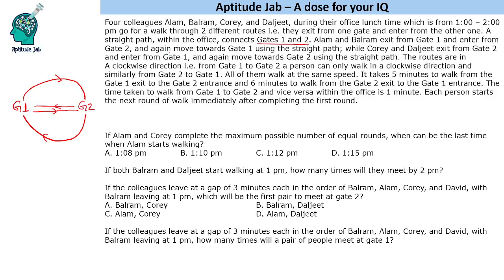A and B exit from gate 1, so this is the route for A and B, and this is the route for C and D. All of them walk at the same speed. It takes 5 minutes to walk from gate 1 exit to gate 2 entrance, 6 minutes to walk from gate 2 exit to gate 1 entrance, and 1 minute to walk from gate 1 to gate 2 (and vice versa) within the office.